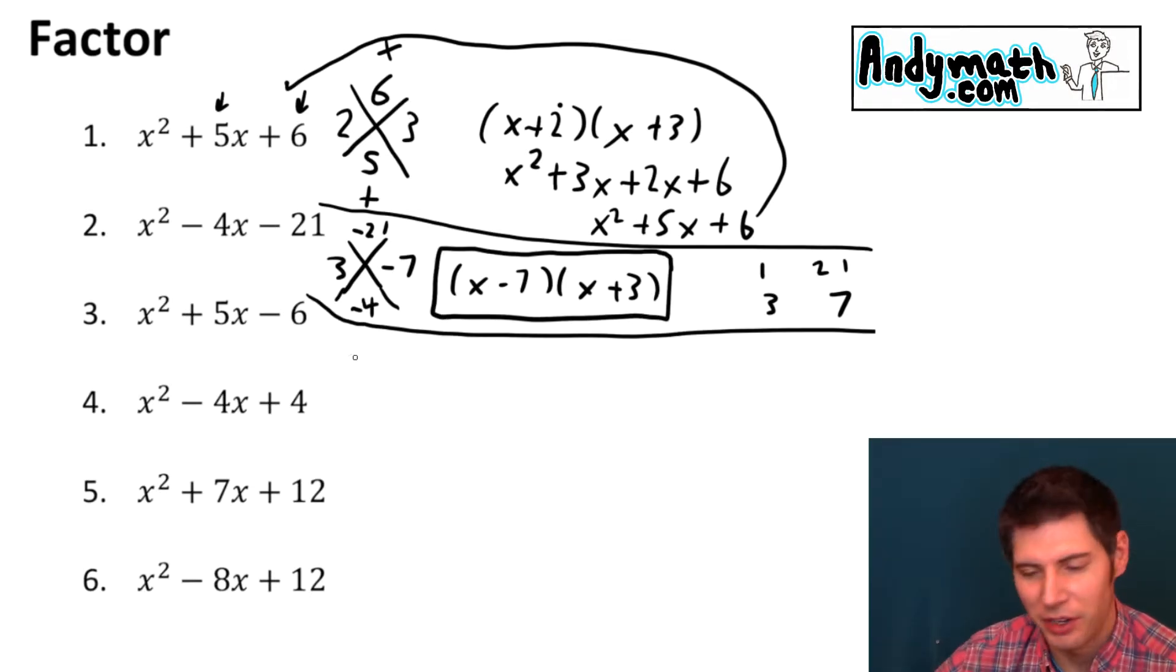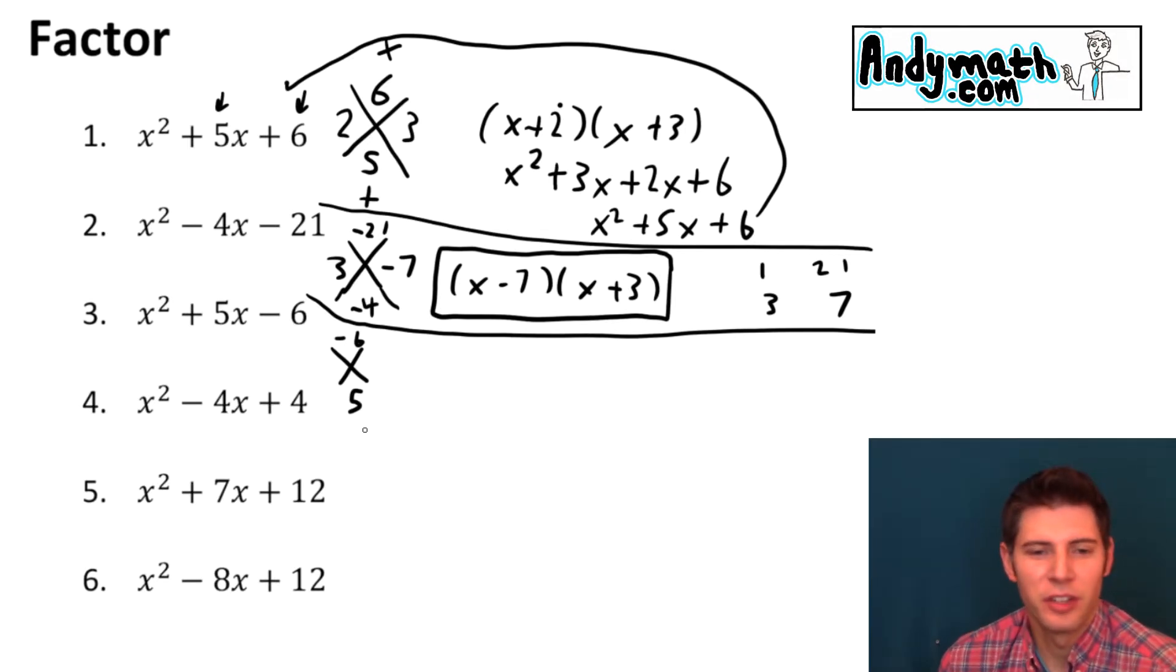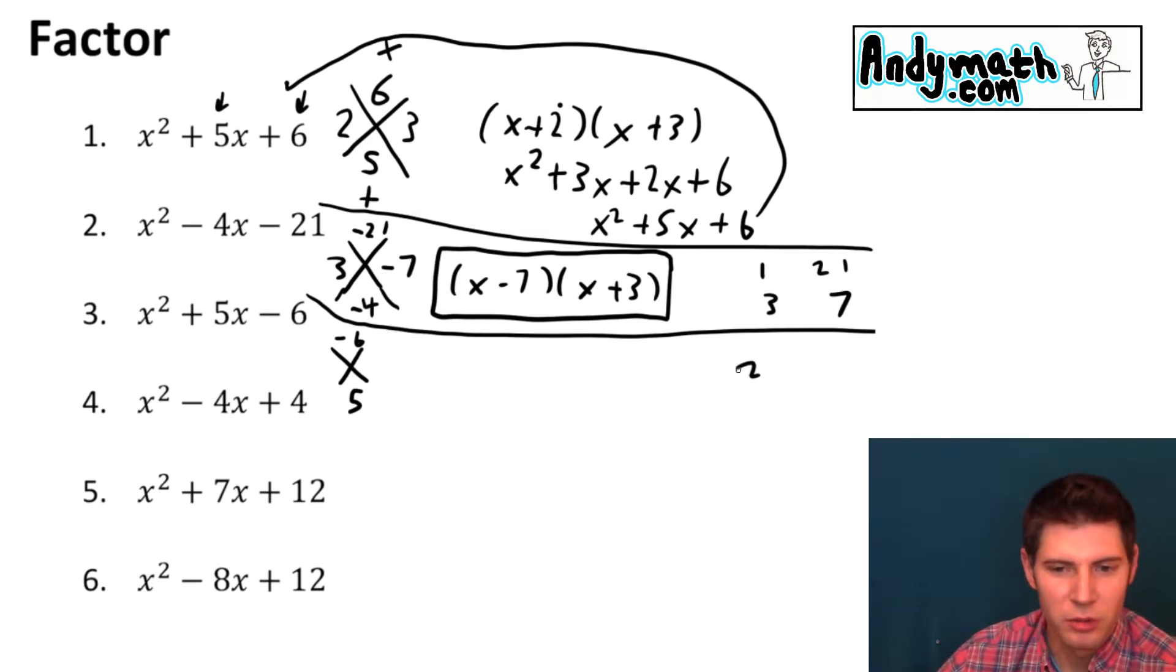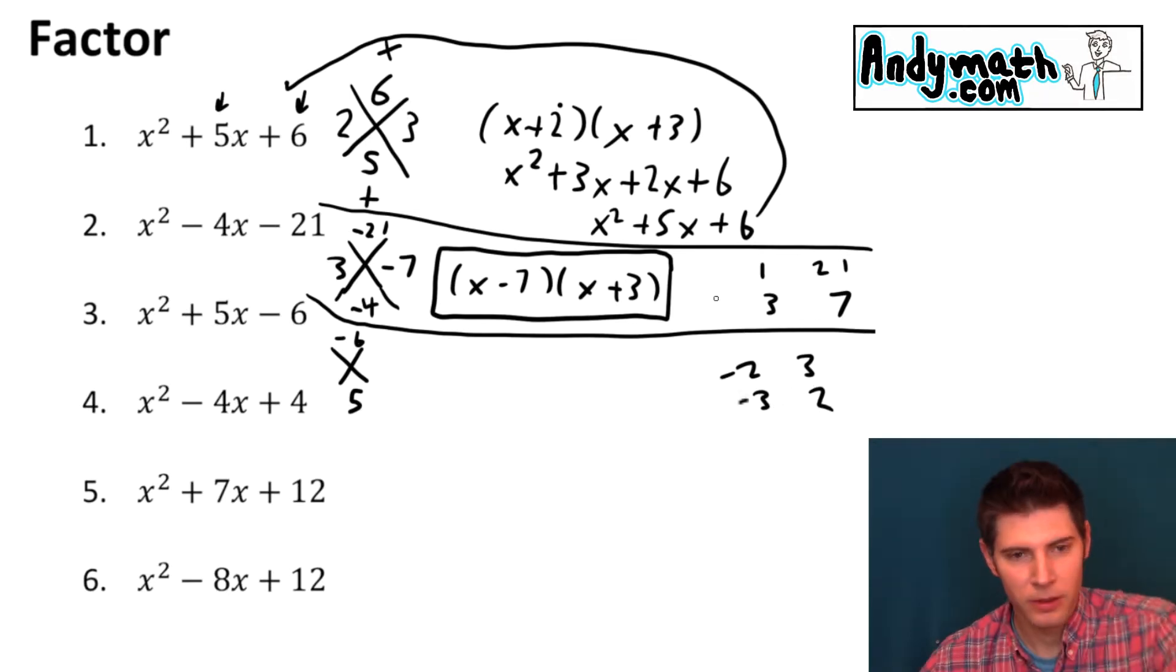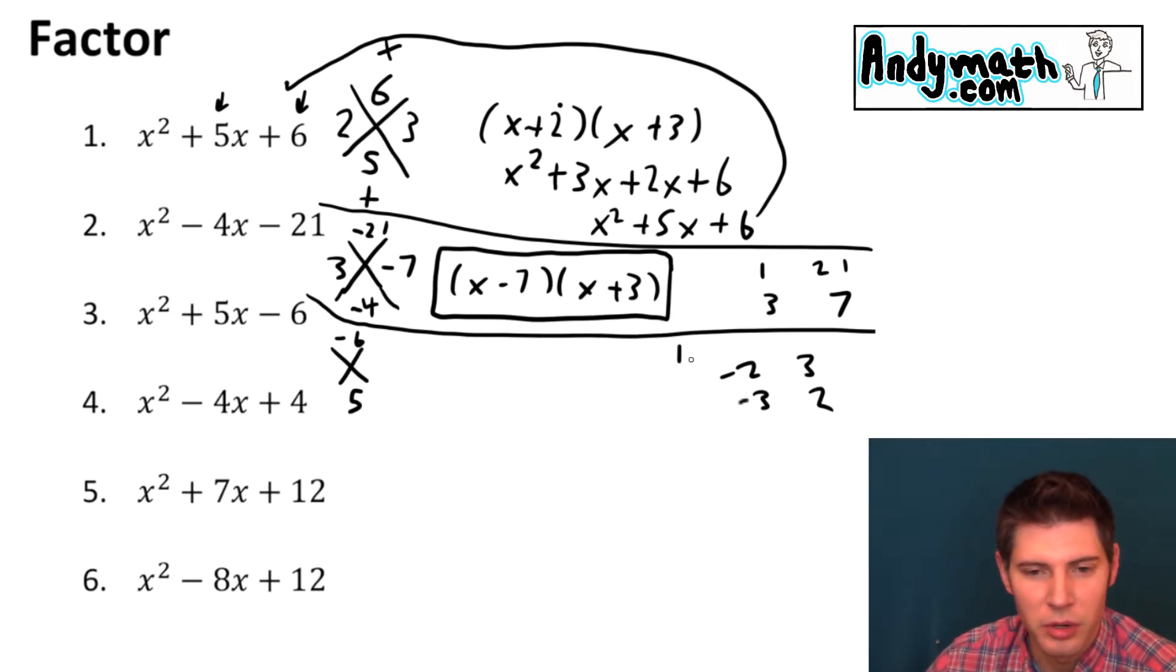Now for the next one number 3. Same thing we want two numbers that multiply to this negative 6 and add to this 5. So immediately you feel like 2 and 3 but 2 and 3 doesn't work because it's a negative 6. So the 2 and the 3 you need a negative 2 or a negative 3 and neither of those would give you a 5 because the numbers are working against each other. So we need to think about what else would multiply to give a 6. Well there's 2 and 3 there's also 1 and 6 and there we go.